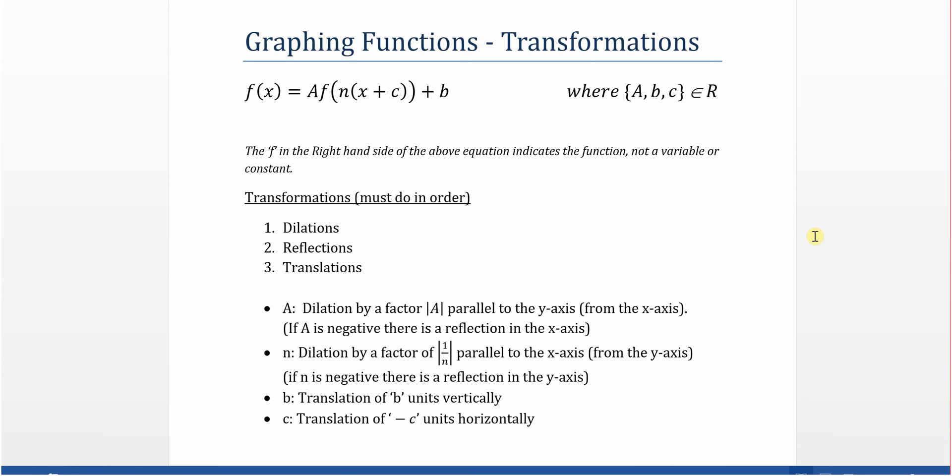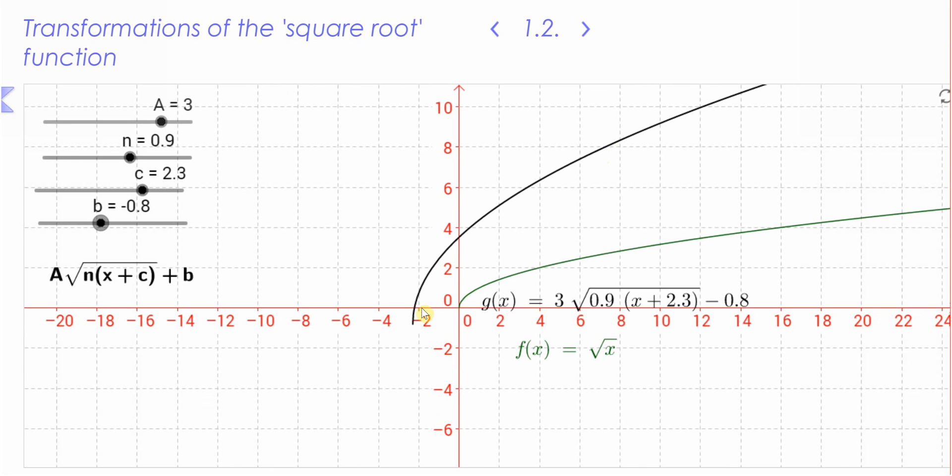Note that the dilations are just magnitude. When we have a negative, they cause reflections for those two values that dilate. Okay, go back to our square root graph. And let's have a look at another one.